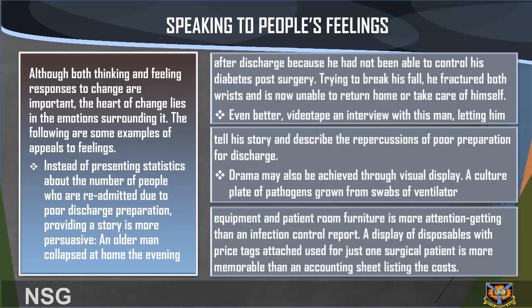For instance, an older man collapsed at home the evening after discharge because he had not been able to control his diabetes post-surgery. Trying to break his fall, he fractured both wrists and is now unable to return home or care for himself. Even better — videotape an interview with this man, letting him tell his story and describe the repercussions of poor discharge preparation. Drama may also be achieved through visual display, such as a culture plate of pathogens grown from swabs of ventilator equipment and patient room furniture, or a display of disposables with price tags showing the cost for just one surgical patient.